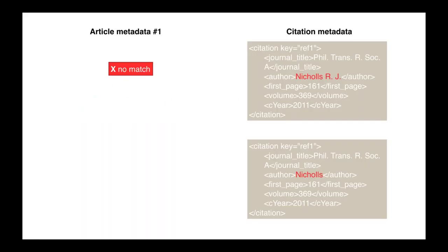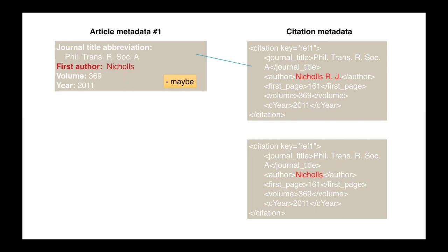Matching a DOI to a citation really hinges on metadata quality and timing. When a member deposits a reference list, we check at that point to see if a matching record is available for each citation. In this first example, the author name in the citation deposit is 'Nichols RJ' but the author surname on record is 'Nichols' — a very minor inconsistency we can usually work with. We'd most likely make a match here because the journal title, volume, and year are consistent. However, if there were another article authored by a Nichols in that volume, we wouldn't be able to make a confident match.